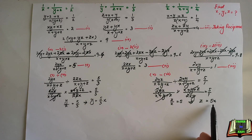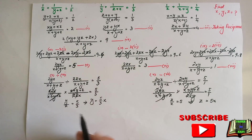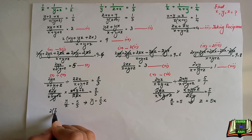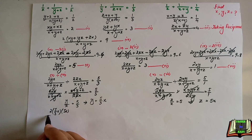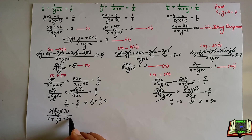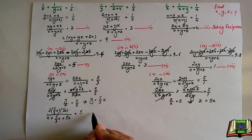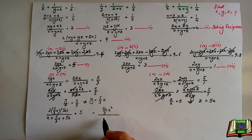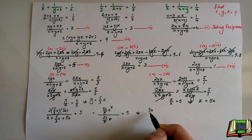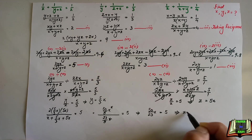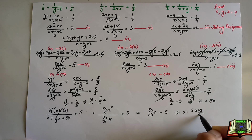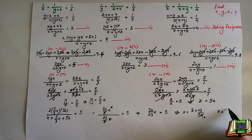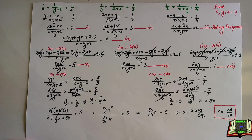We have two values: y equals 5x/3 and z equals 5x. Substituting into equation 5: 2·(5x/3)·(5x) over (x + 5x/3 + 5x) equals 5. The numerator becomes 50x²/3. Taking LCM for the denominator gives 23x/3. Simplifying: 50x²/3 over 23x/3 equals 5, so 50 over 23x equals 5, giving x equals 23/10.